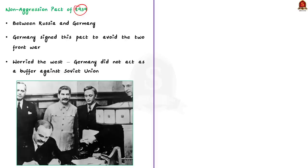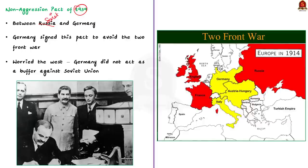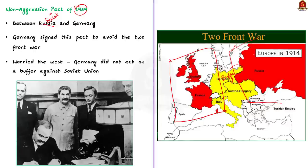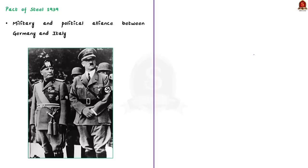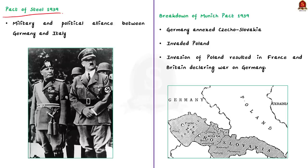Germany signed this pact to avoid a two-front war. During World War I, Germany had to fight France in the West and Russia in the East, dividing its army and reducing effectiveness. This pact worried the Allied powers, as the West had seen Hitler's Germany as a buffer against the Soviet Union. Additionally, in 1939, Italy signed the Pact of Steel with Germany, forming a military and political alliance that solidified Italy's alignment with Nazi Germany.